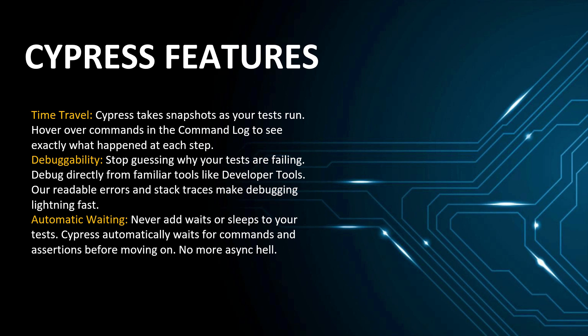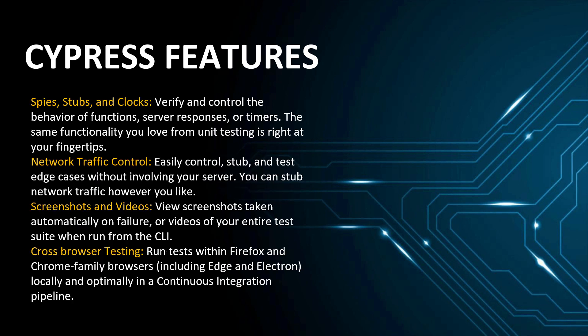One feature I really like about Cypress is automatic waiting. In Selenium, you need to insert different kinds of waits — implicit waits, explicit waits — in order to sync your scripts, because Selenium works via APIs. In Cypress, since it sits inside your browser, it will automatically handle all the waiting for you. You don't need to provide any kind of waits.